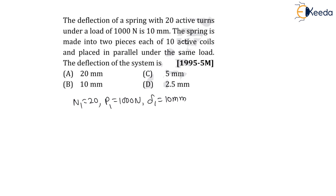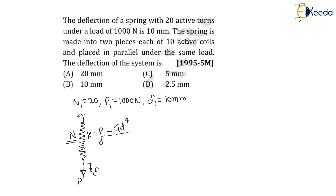The spring is made into two pieces each of 10 active coils. There is a spring on which force p is applied, and because of this force there will be a deflection in the spring. The spring constant k is nothing but force divided by deflection. The formula for spring stiffness is k = Gd⁴ / (8D³N), where G is shear modulus, d is wire diameter, D is mean coil diameter, and N is the number of active coils.